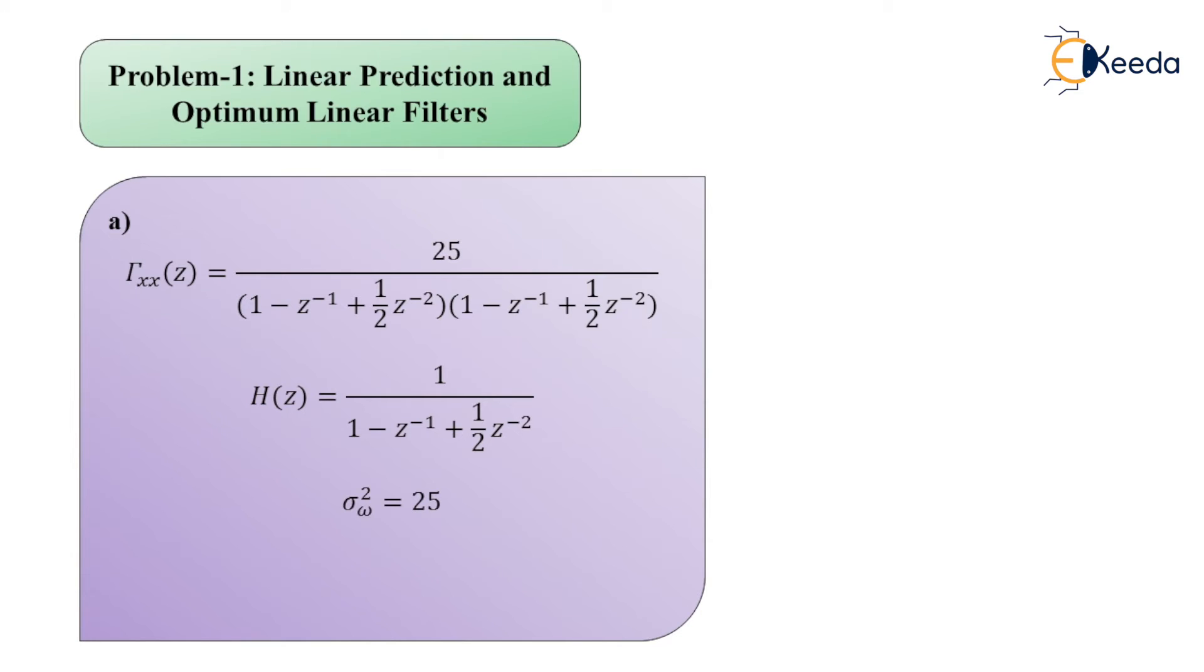We have been provided the value of σ_w², the variance, which equals 25. Therefore, the required difference equation for the AR discrete time random process with the input to be of white noise is: x(n) = x(n-1) - 1/2 x(n-2) + w(n). So this is the solution to part A of the problem statement.